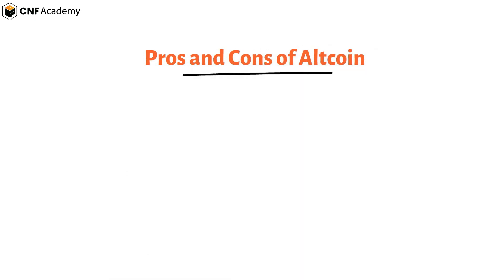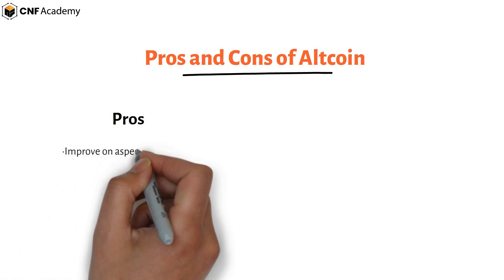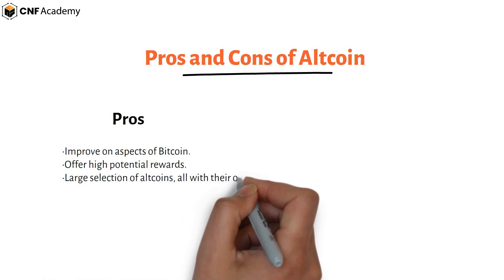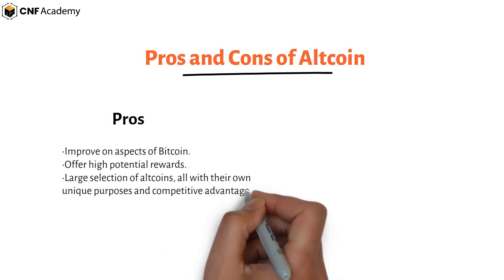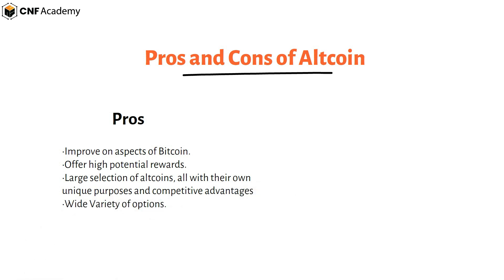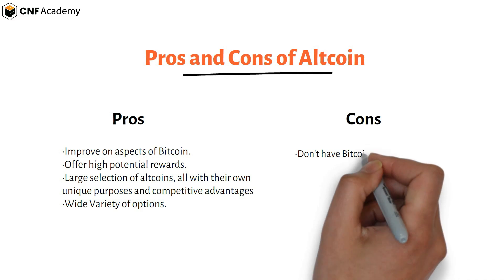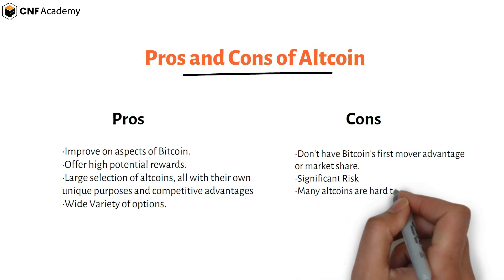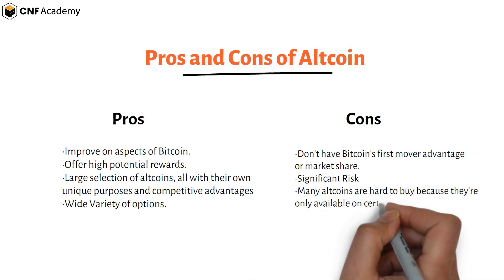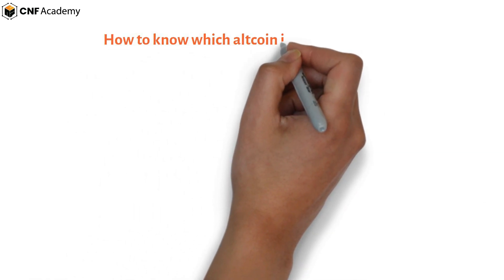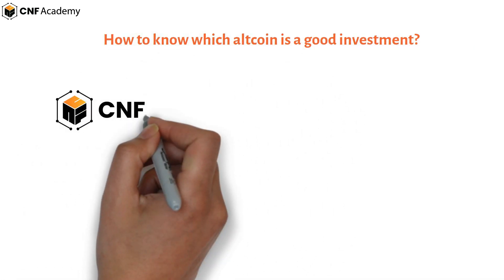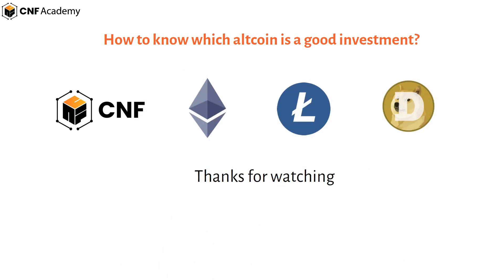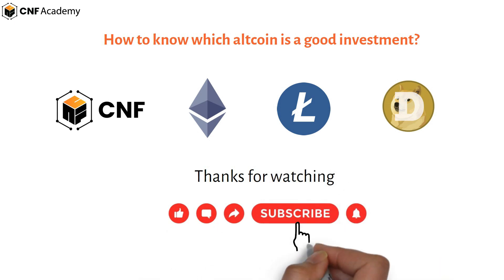Pros of altcoins: they improve on aspects of bitcoin, offer high potential rewards, and come in a large selection all with unique purposes and competitive advantages, providing a wide variety of options. Cons: they don't have bitcoin's first-mover advantage for market share, carry significant risk, and many altcoins are hard to buy because they are only available on certain exchanges. Good altcoin investments to consider include CNF, ETH, Litecoin, and Dogecoin. Thanks for watching this video and do not forget to subscribe to our channel.